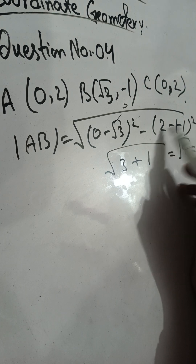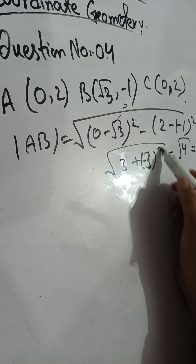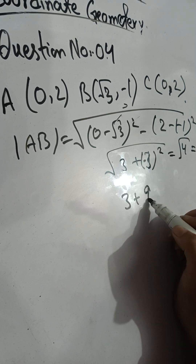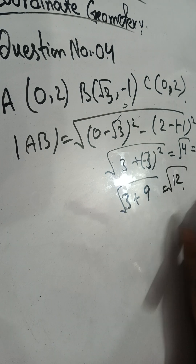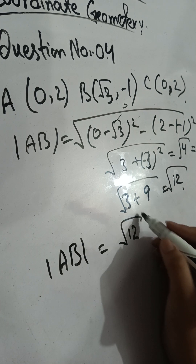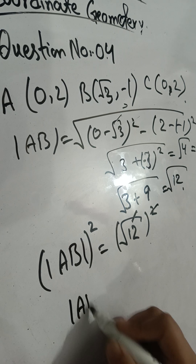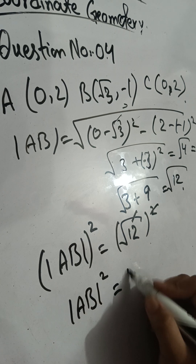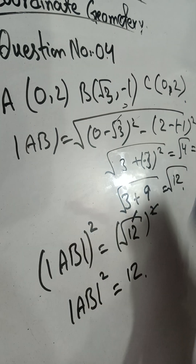For distance AB: we compute root 3 minus 0 squared plus negative 1 minus 2 squared. That gives 3, and then 3 minus negative 3 whole squared gives 9, so 3 plus 9 equals 12. The square root of 12 is the distance AB. So AB equals root 12.